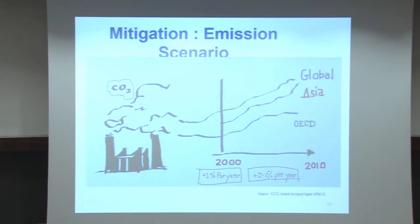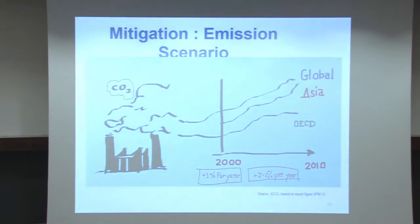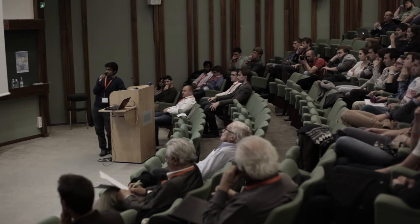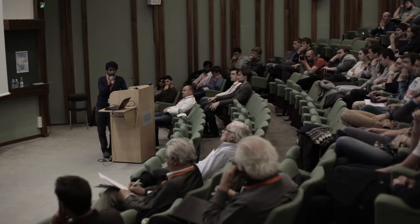From the pre-industrial level, from 1950 to 2000, CO2 emissions grew at about 1% per year. But if you consider the last 10 years — from 2000 to 2010 — you get an increase of about 2.2%. And who are the responsible countries? Globally, we are approaching ever higher CO2 emissions.